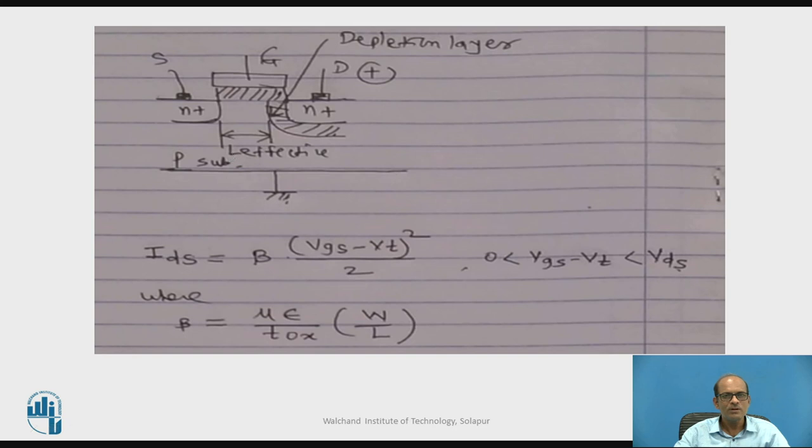Now if VDS is increased, what will happen? The reverse bias voltage will go on increasing and a depletion layer is formed between this P-N junction between drain and substrate as shown in figure. As VDS is increased, this depletion layer penetrates into the substrate and it penetrates into the channel. Thereby the effective length of the channel is reduced as shown in figure and it is L-effective.